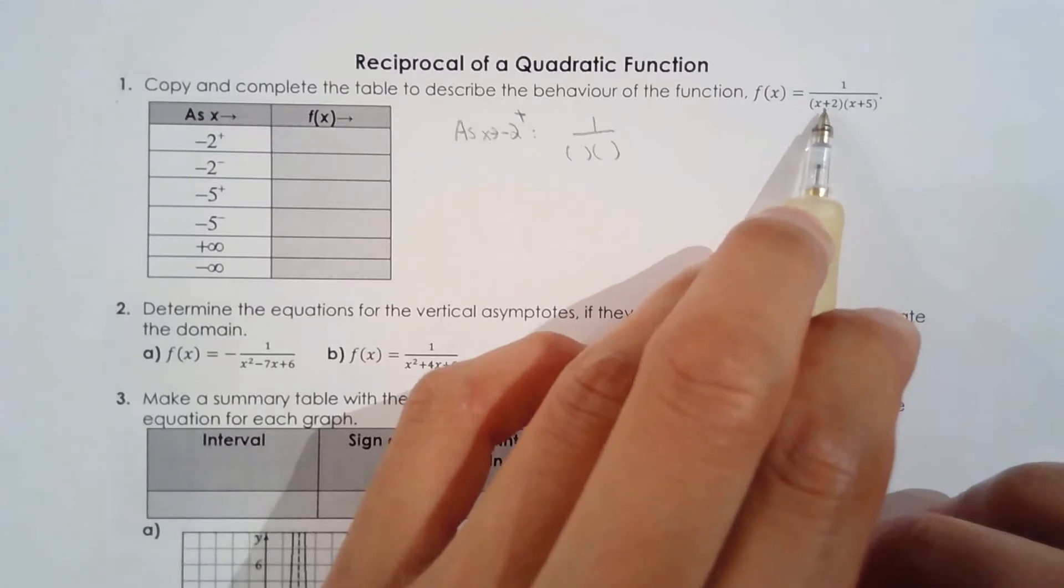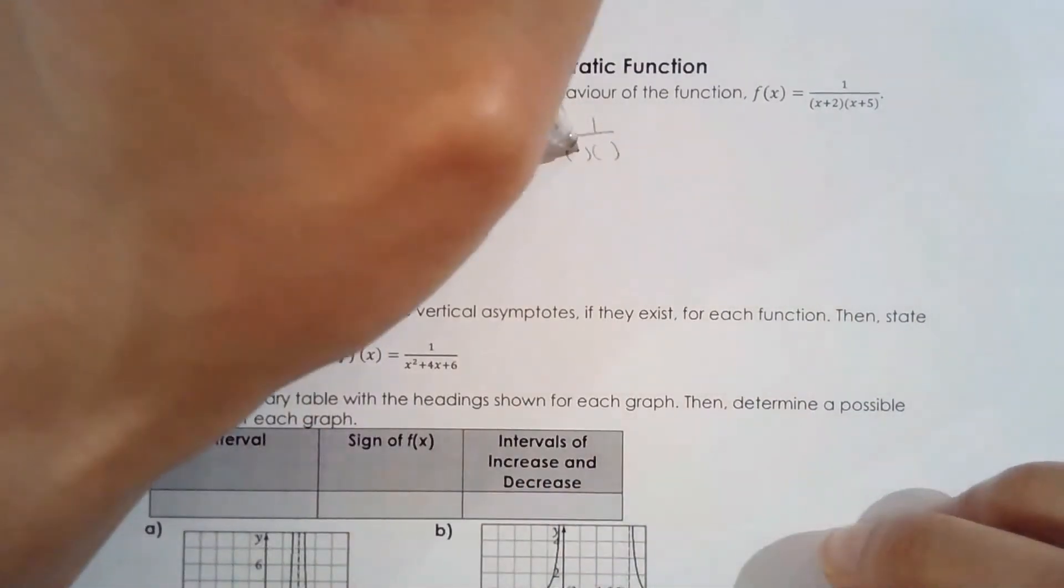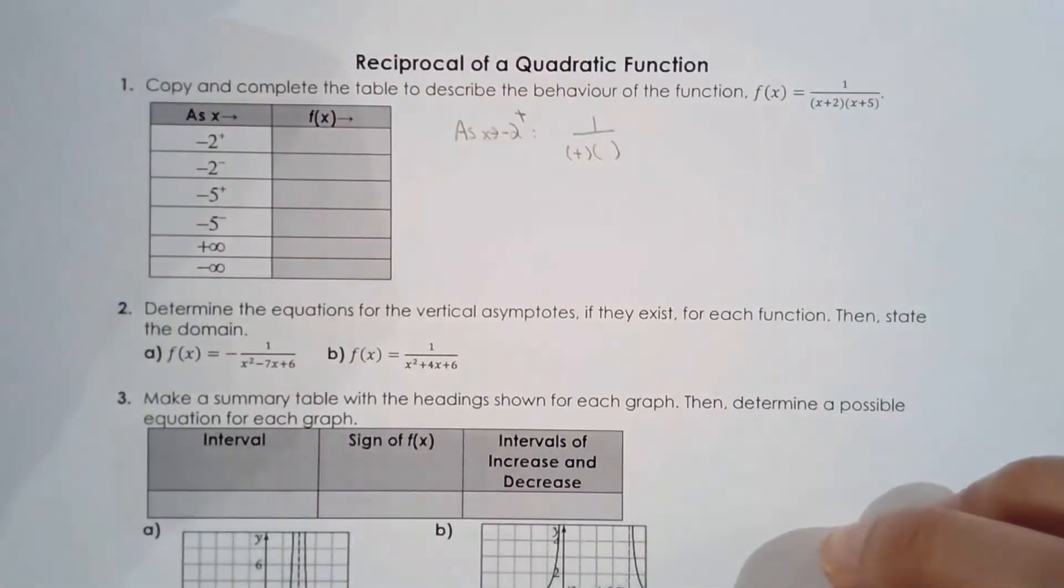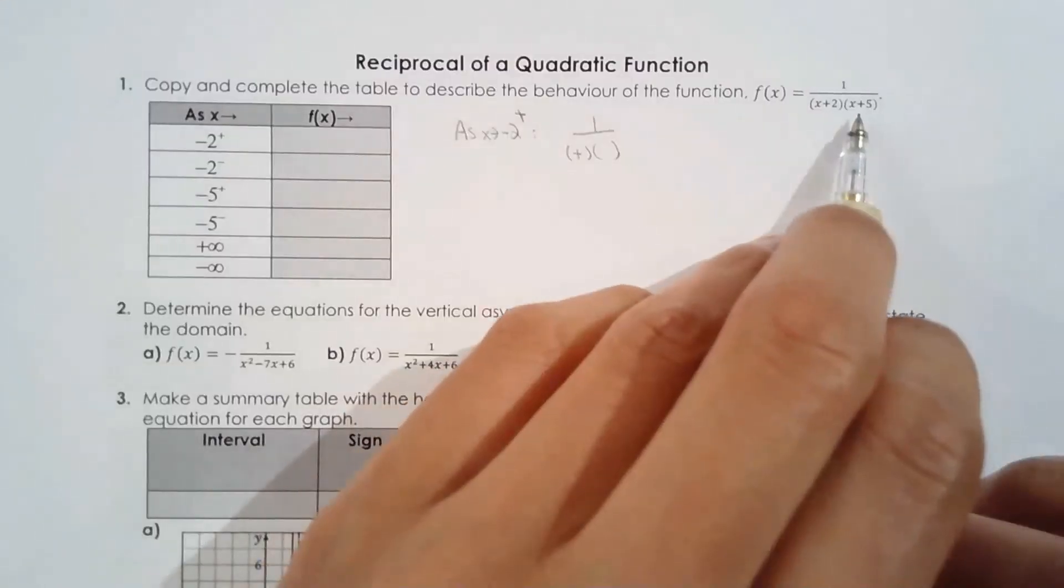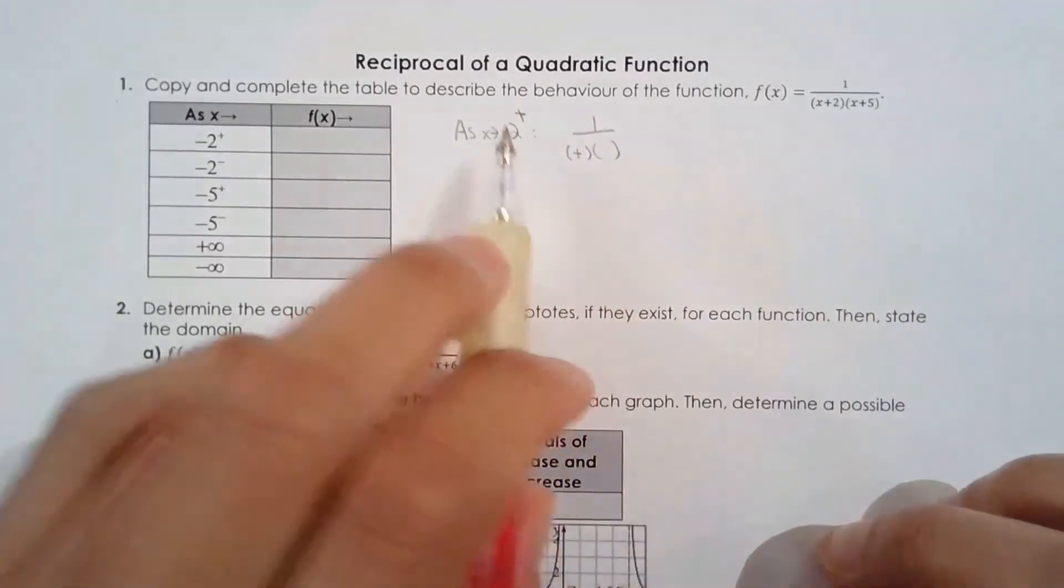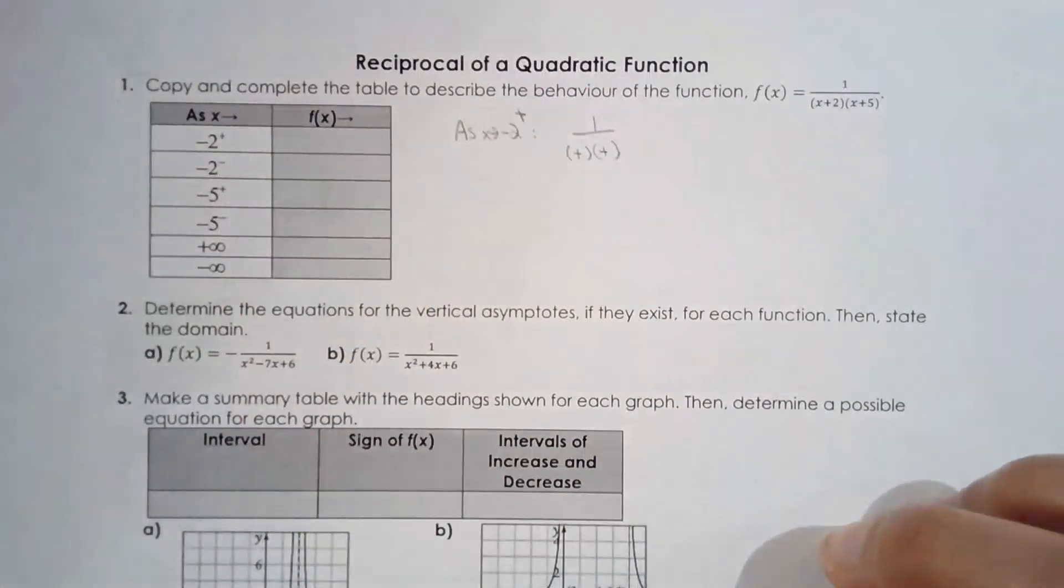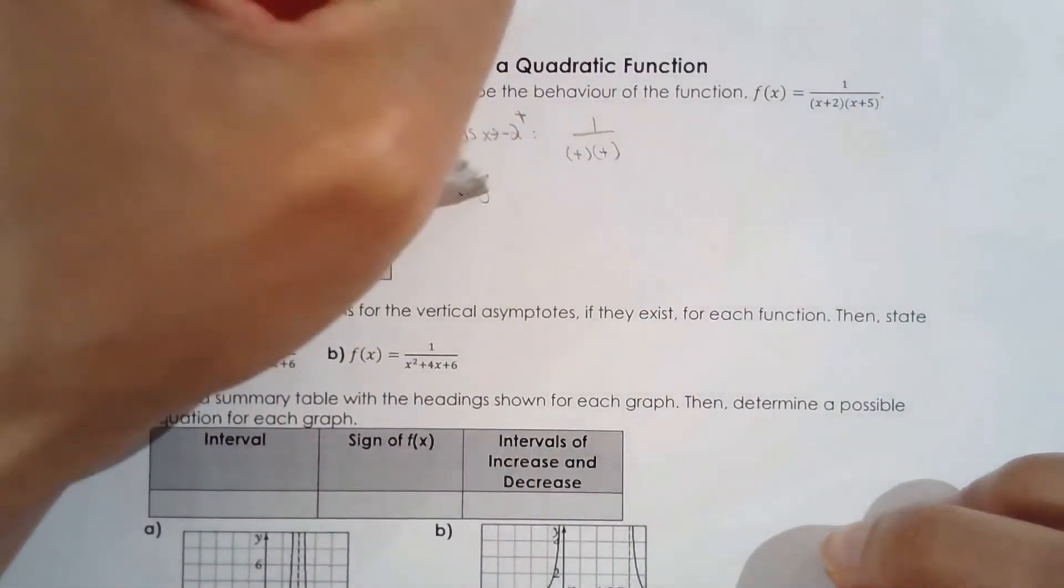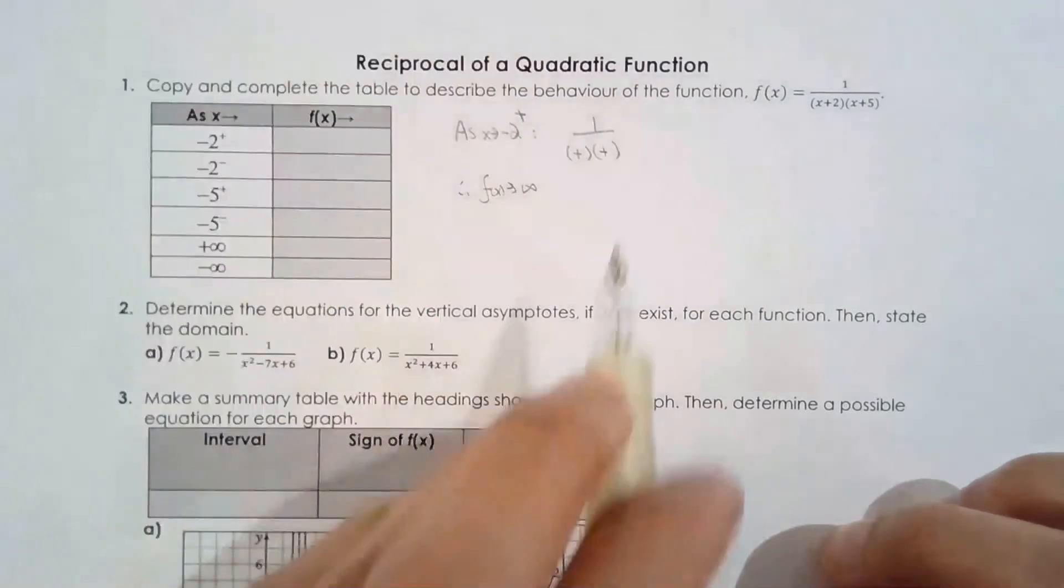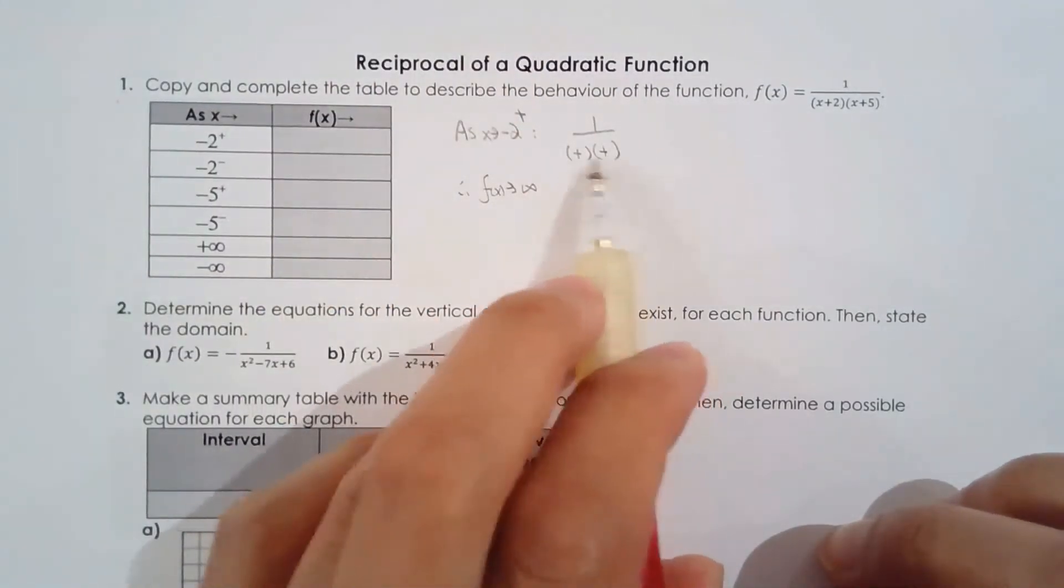then this factor I'm hoping you realize will be a positive value. And then negative two plus five, negative two from the right doesn't really matter. This is still going to be positive. So guess what? Therefore, f of x approaches positive infinity. How do I know? Positive, positive, that's a positive number.